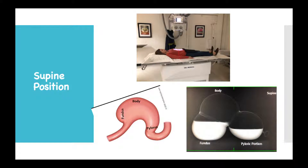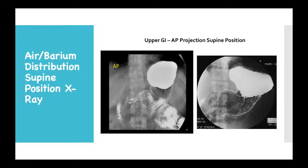In the supine position, the barium is located more within the fundus portion of the stomach since it lies more posterior in the human body. Therefore, air would be located more in the body and pyloric portion of the stomach. The image of the individual lying on the x-ray table is in the supine position and their stomach is positioned similar to the images displayed. The x-ray images shown here demonstrate exactly how the air-barium distribution would look in an actual upper GI exam with a patient in the supine position.